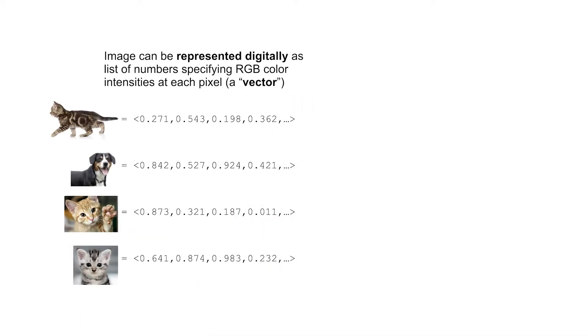In the previous section, I talked about a prototypical machine learning problem, which is taking an image and outputting a label, such as cat or dog. To understand how a machine learning algorithm might learn how to do this, let's think about how images are actually represented.